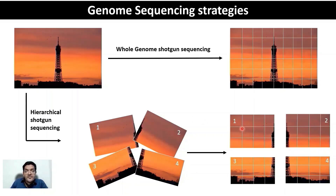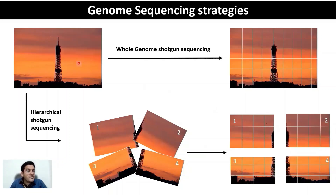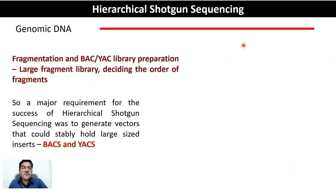You break individual large pieces into smaller pieces amenable to Sanger sequencing, sequence each of those smaller pieces, then assemble locally all fragments obtained from each large fragment. Whatever errors you make in assembling one large fragment are localized to that fragment and don't spill over to others. Once you assemble the individual large fragments, you put them together to get the final genome sequence. This is where the requirement for large insert vectors comes in — BACs and YACs were specifically developed to enable the hierarchical shotgun sequencing strategy for the human genome project. This is the context in which we are talking about BACs and YACs.